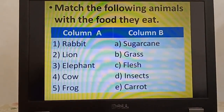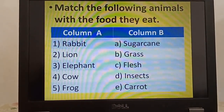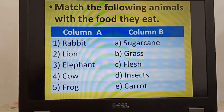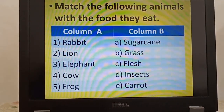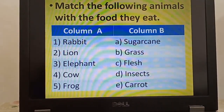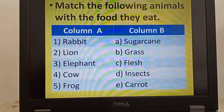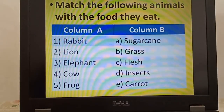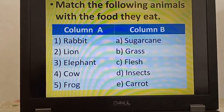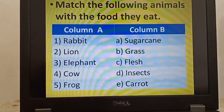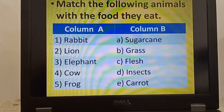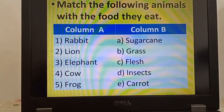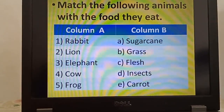As you can see in the table, the animals given are rabbit, lion, elephant, cow, and frog. In the opposite column, their favourite food is given. We have to match them correctly.